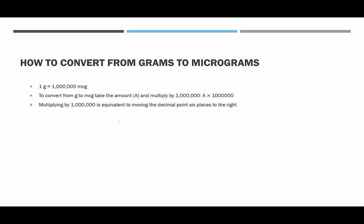To convert from grams into micrograms, take the given amount of grams and multiply it by one million. Multiplying by one million is equivalent to moving the decimal point six places to the right. Because we are taking this number and multiplying it by a million, we're probably going to have to add a lot of zeros to the number.